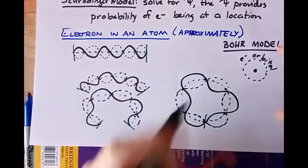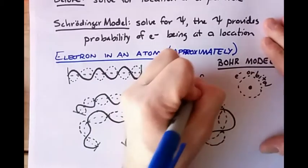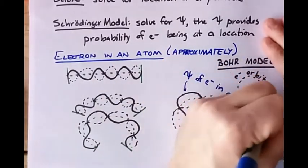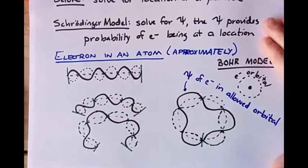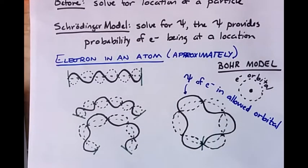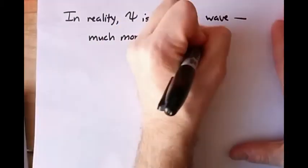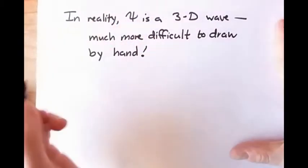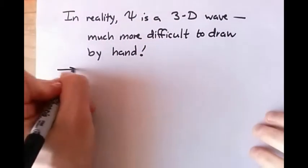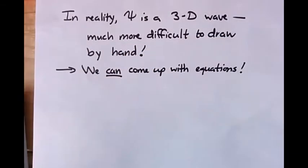This is roughly the idea of the electron's wave function fitting into the allowed orbitals of electrons in the atom. This is a simplified model. In reality, the actual wave function representing the electron in these allowed orbitals is three-dimensional, and it's a little tough to picture a three-dimensional wave. We're not going to try to draw it, but we can come up with simulations and equations that describe the wave function.